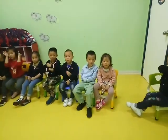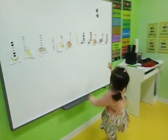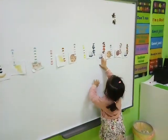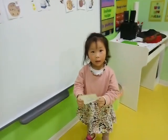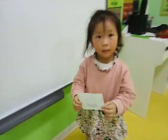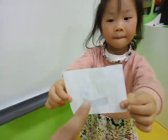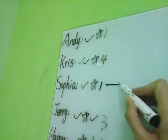Next is Sophia. Come on, Sophia. What food do you like? I like milk. What number? Number 3. She got 3 points. Thank you, Sophia, sit down. Sophia got 3 points.